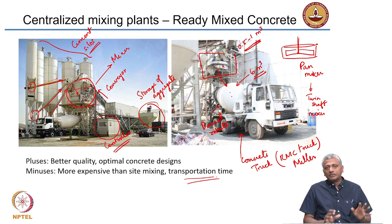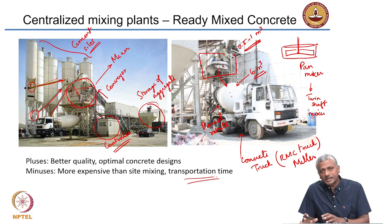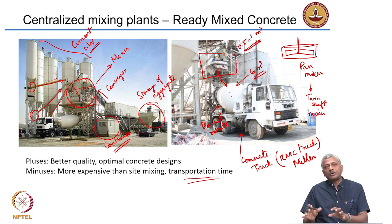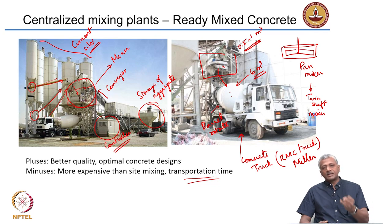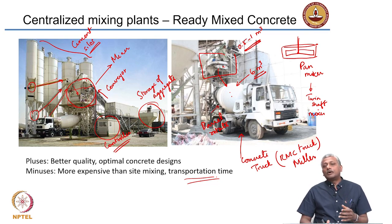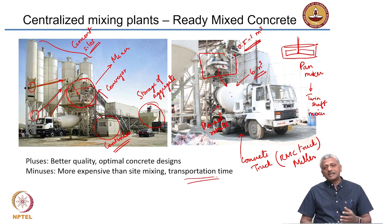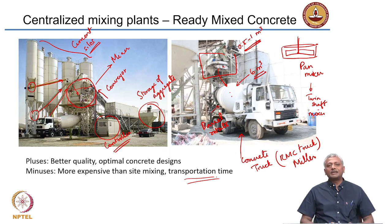You need to ensure that when concrete arrives at the job site, it is checked for quality. When the truck arrives, it delivers the concrete and some testing is done. One test typically performed is the slump test, to ensure sufficient workability for the construction process. The other is making specimens to test the strength of the concrete at a later date — usually at 7 days or 28 days.